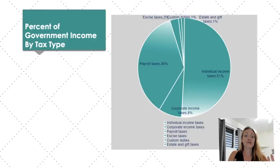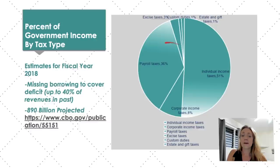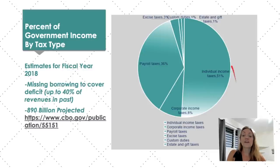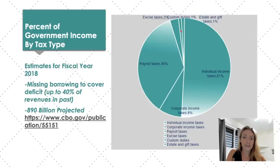Here's a chart showing the percent of our government's current income by tax type. You can see payroll taxes bringing in about 40%, individual income taxes bringing in 51%, excise taxes bringing in a small amount, duties — which is similar — and then estate and gift taxes at 1%, and corporate income taxes at 8%.